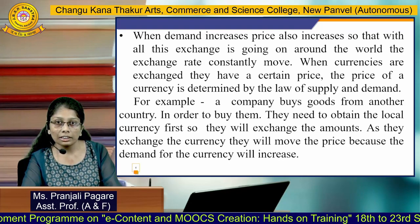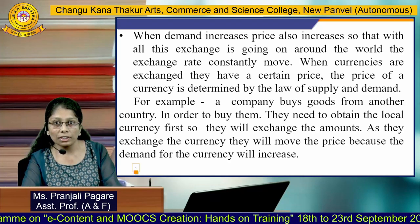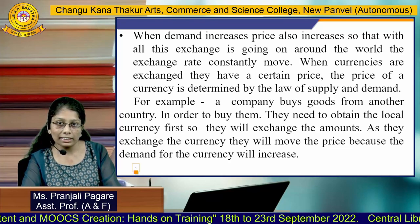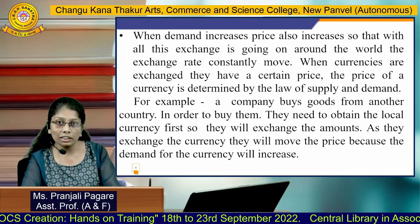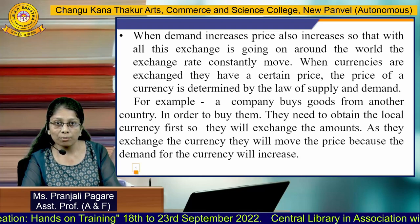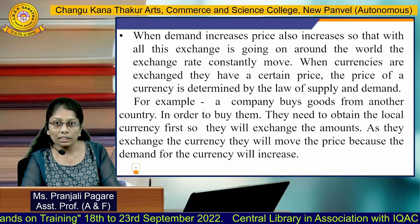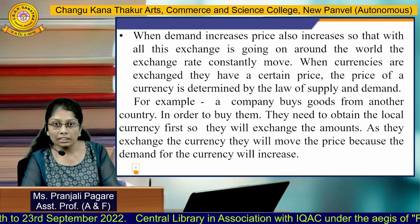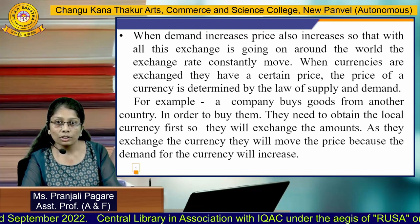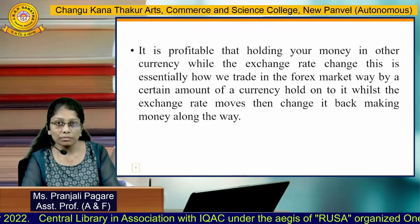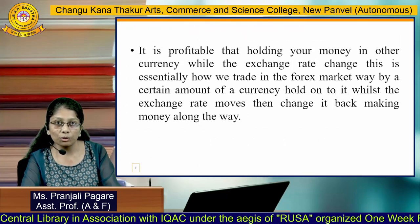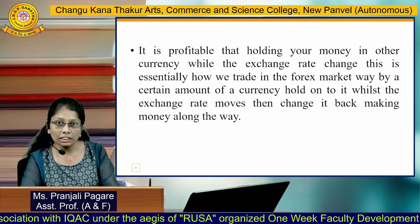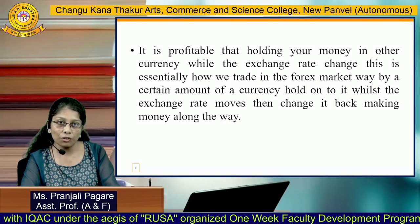When currencies are exchanged, they have a certain price. The price of a currency is determined by the law of supply and demand. For example, a company buys goods from another country. In order to buy them, they need to obtain the local currency first. So they will exchange the amounts. As they exchange the currency, they will move the price because the demand for the currency will increase. It is profitable to hold your money in another currency, and this is essentially how we trade in the Forex market.